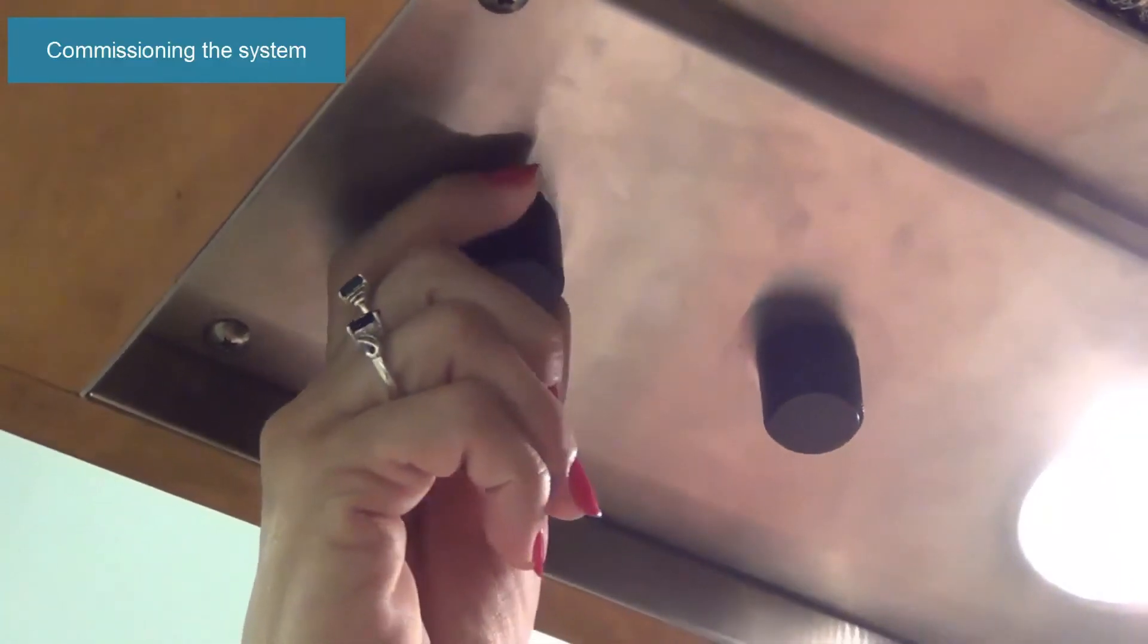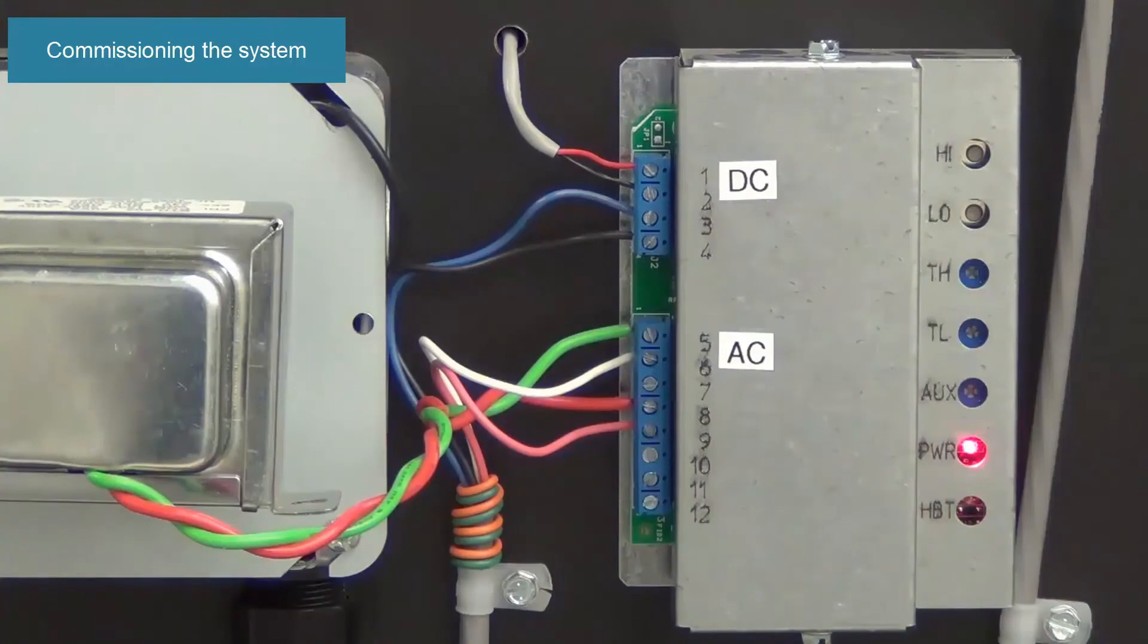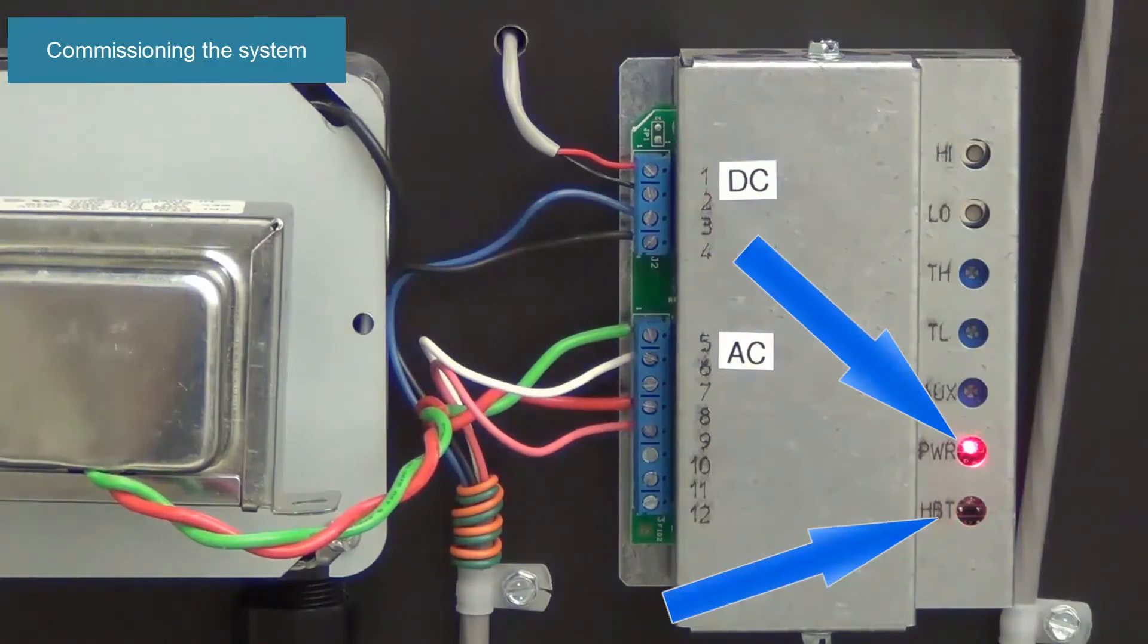Turn on the power to the exhaust fan, make up air fan and if installed, the heater. On the controller, there will be a steady red power light and a pulsing heartbeat LED to indicate the control is energized and ready for programming.